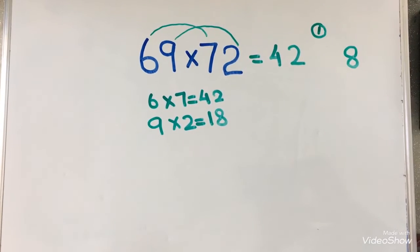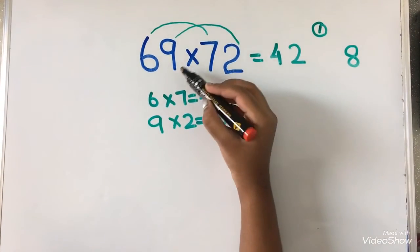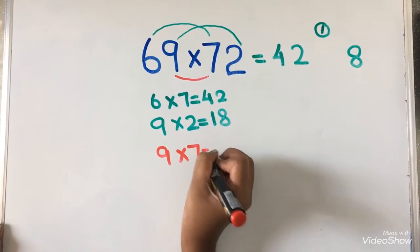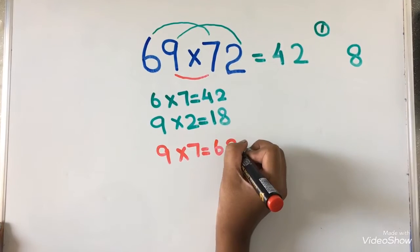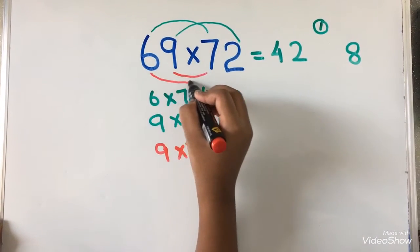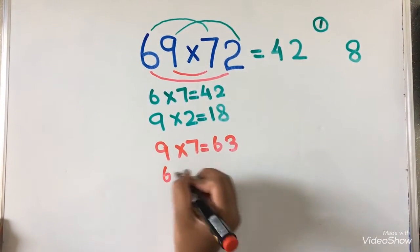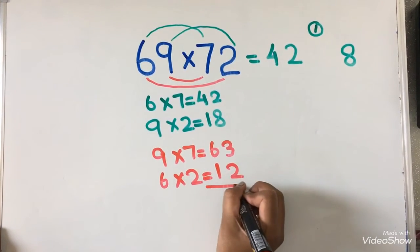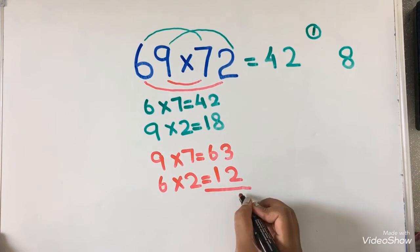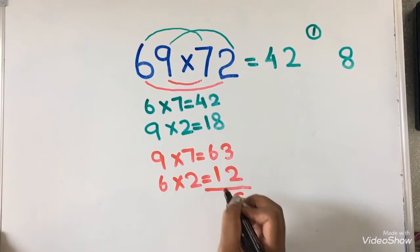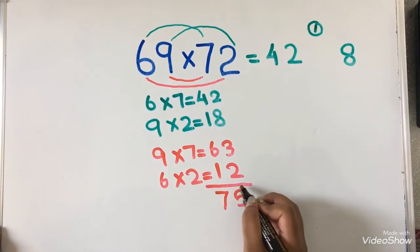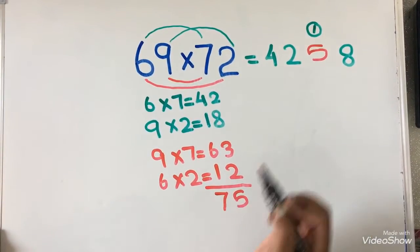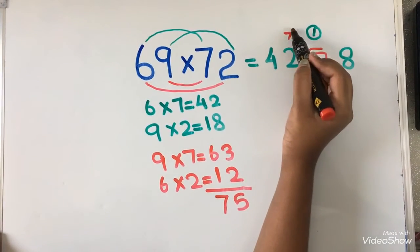Now, we are going to multiply the middle numbers. 9 into 7 equals to 63. And 6 into 2 equals to 12. Now, I am going to add it. 3 plus 2 equals to 5. And 6 plus 1 equals to 7. This digit is 5. I am going to write it over here. And 7 I am going to put it as a carry over.